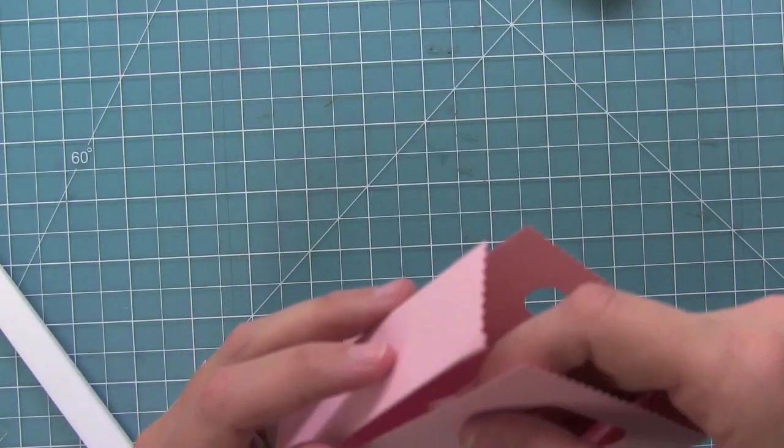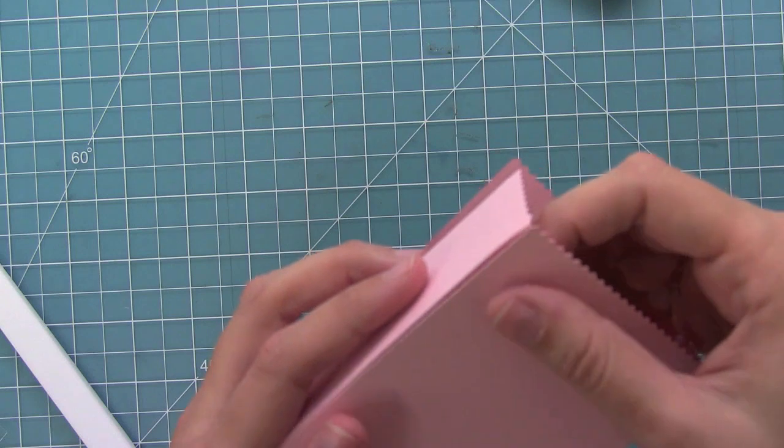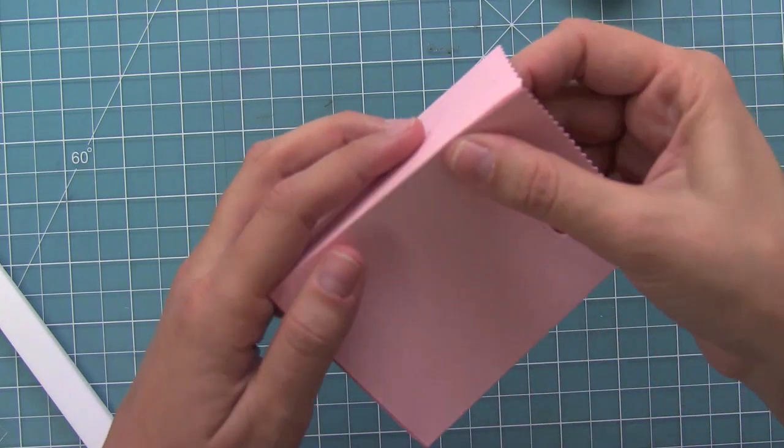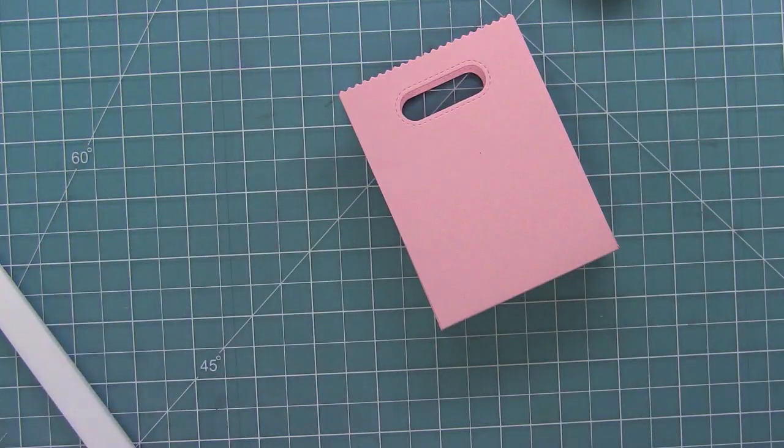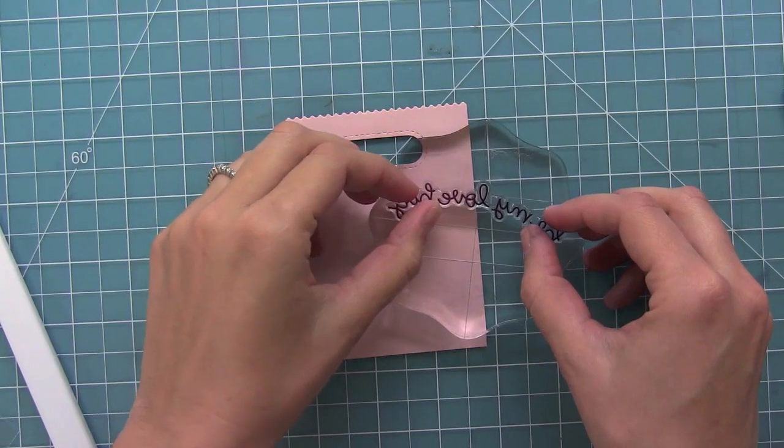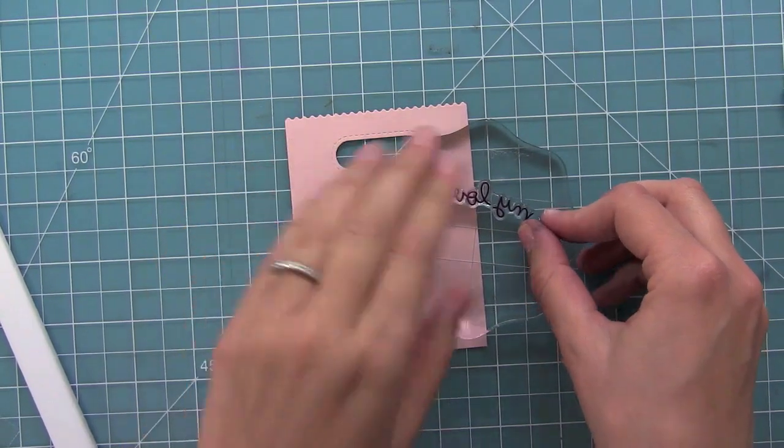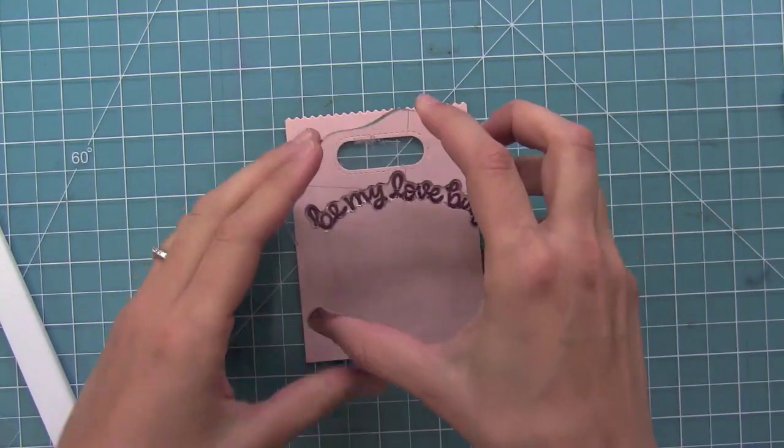Now I thought it would be really fun to make a goodie bag. I've been making so many Christmas themed goodie bags that I thought it would be really fun to start making some valentines ones. So I went ahead and assembled the bag and I'll link above if you haven't assembled the bag before, we have a video on that. And now I'm going to take my be my love bug sentiment and curve it on my block.